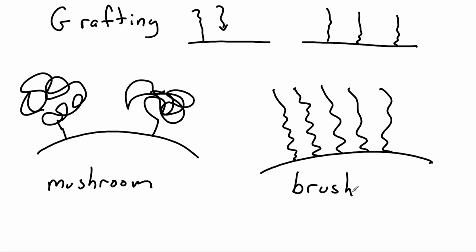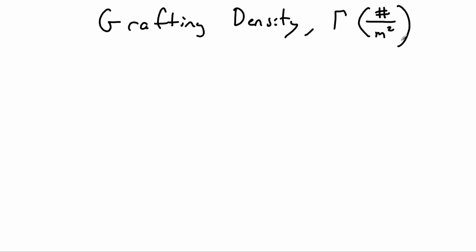And whether or not you're in the brush regime or the mushroom regime depends on the density of grafting. So grafting density is just the number of chains per meter squared. And the reciprocal of the grafting density is going to be the amount of space per molecule.